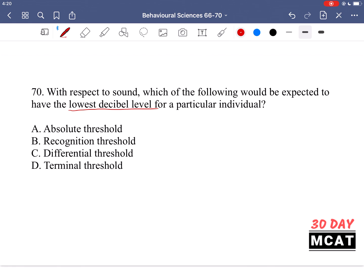Option B, recognition threshold. This is the threshold it must reach before you can recognize what that sound is. Maybe you can recognize what the source of the sound is. It's coming from this type of origin. This, you can logic out, will be higher than the absolute threshold.